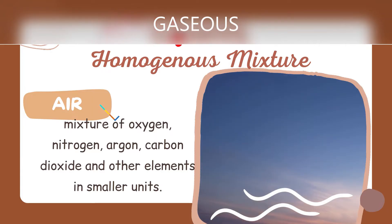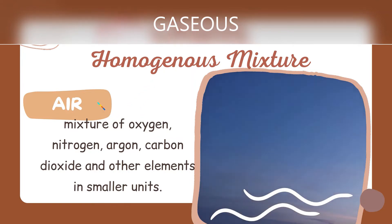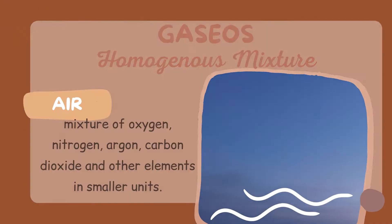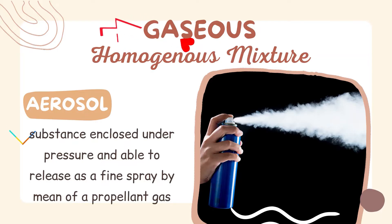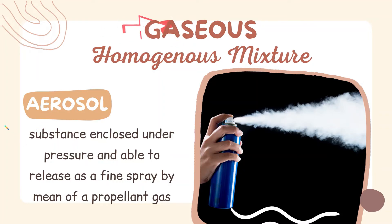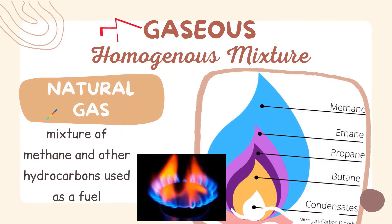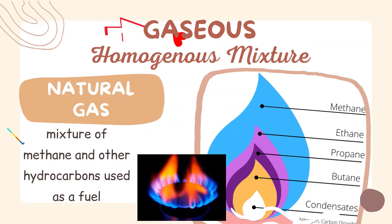Can you think of other gaseous homogeneous mixtures? You can see them in our kitchen. We have aerosol — a substance enclosed under pressure and able to release as a fine spray by means of a propellant gas. Do you have this at home? Remember, do not try it. And then we have natural gas, a mixture of methane and other hydrocarbons used as a fuel. It's a combination of methane, ethane, propane, butane, and condensates.